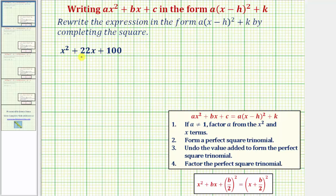We're asked to rewrite the expression x squared plus 22x plus 100 in the form a times the quantity x minus h squared plus k. So we're writing the given expression in the form on the left and the form on the right.